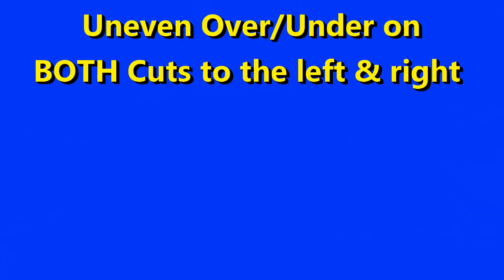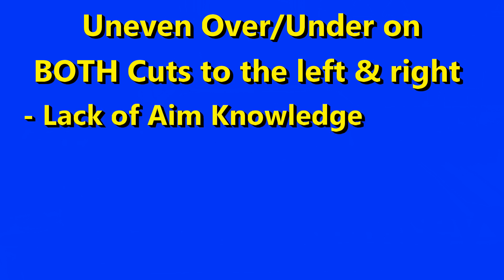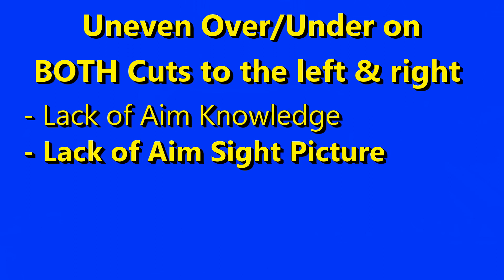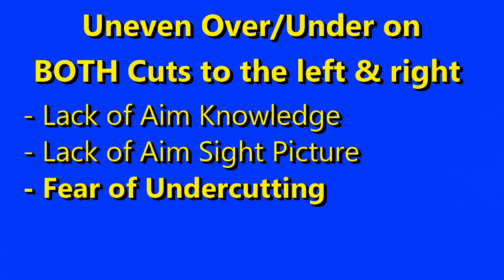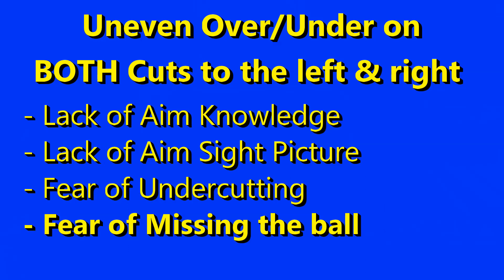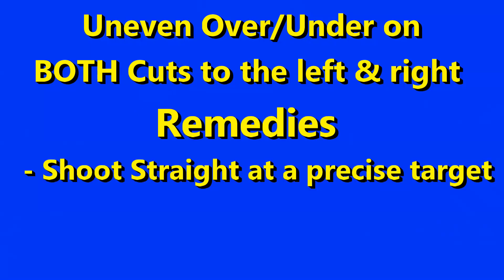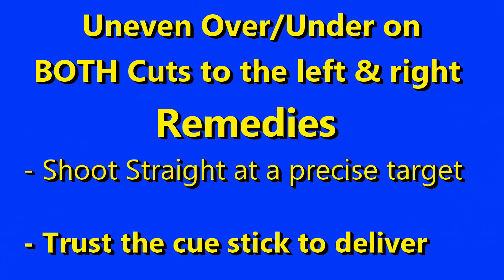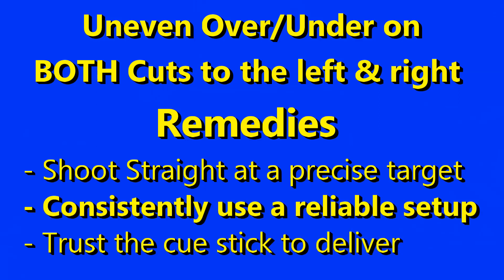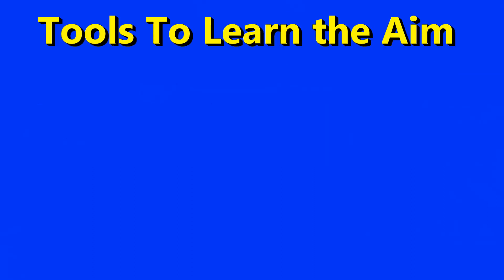With this data, we can consider several more issues. If you consistently overcut or undercut in both cut directions, the problem is likely one or more of these: lack of knowing how to aim the shot or an incorrectly learned sight picture; or fear of not cutting enough, or stroke steering to help cut the shot, that leads to overcutting. Learn to always shoot straight and confidently at a precise target — just like that cue ball into the corner pocket shot we described at the beginning — and trust in the cue stick to deliver now that you've done a good setup.